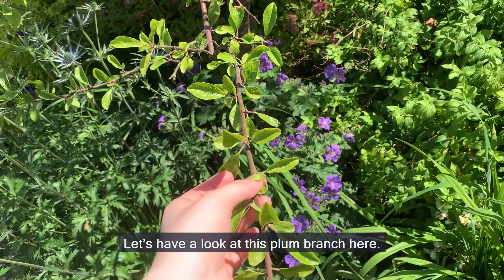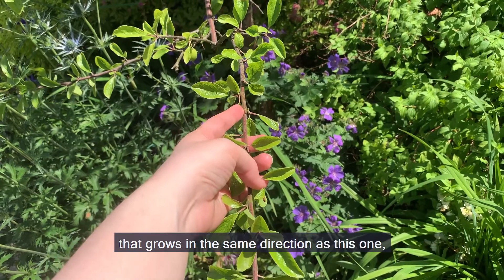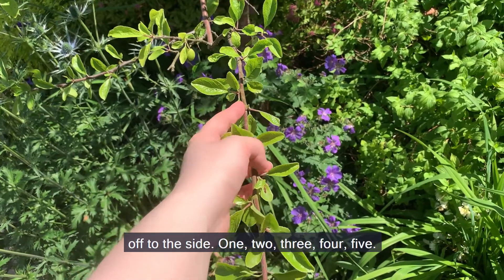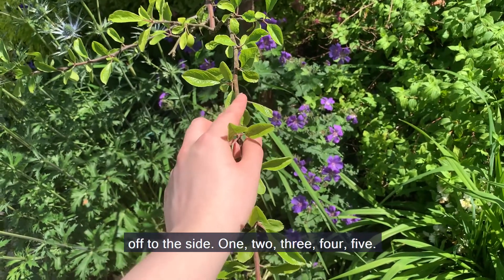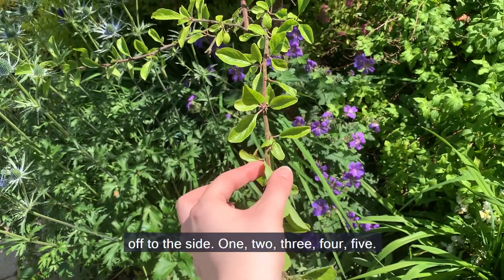Let's have a look at this plum branch here. We can count along the leaves to find out when we'll find a leaf that grows in the same direction as this one, off to the side. One, two, three, four, five. Five is one of the Fibonacci numbers in the sequence we drew earlier.